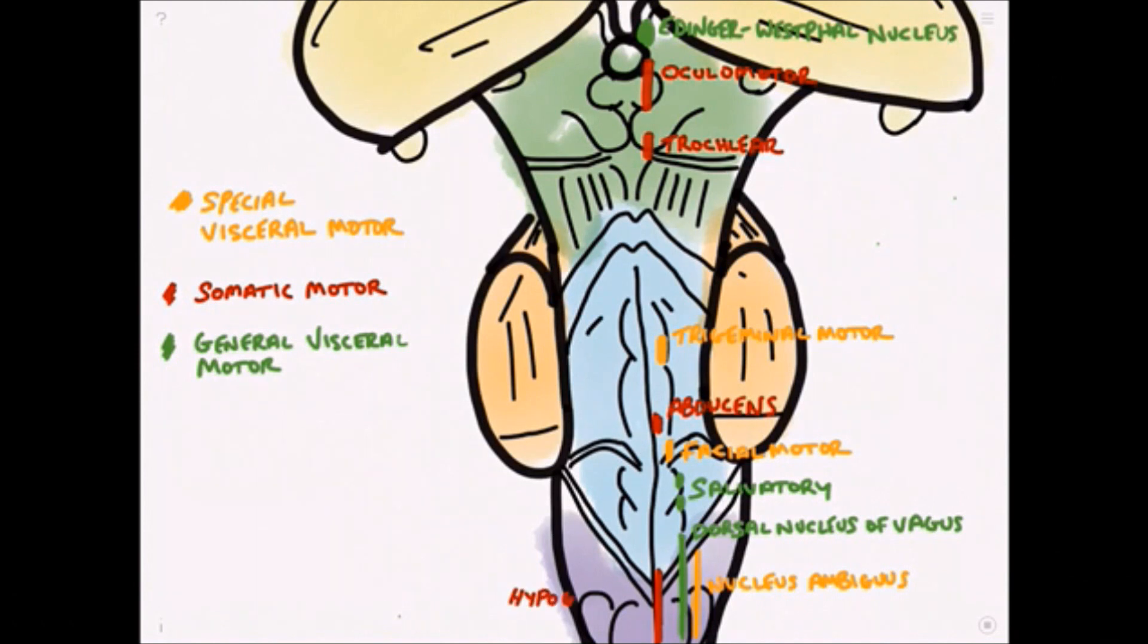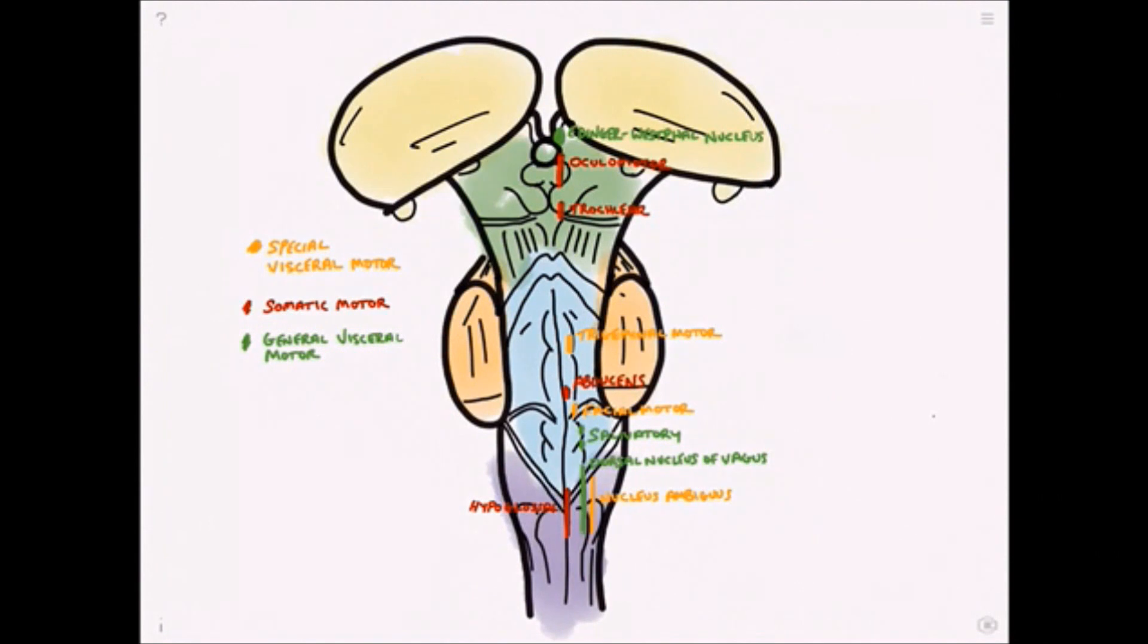And here we have the hypoglossal nucleus, and in this lie the cell bodies of the nerves which are associated with tongue movements.